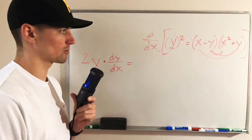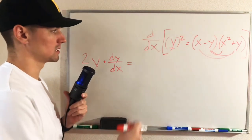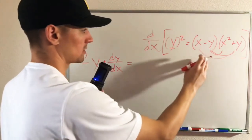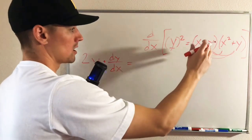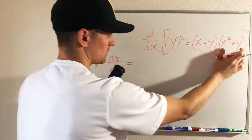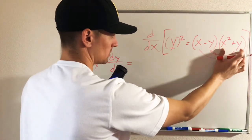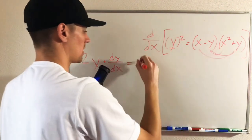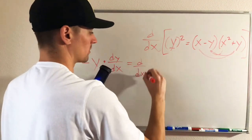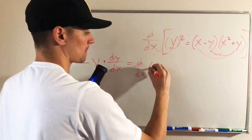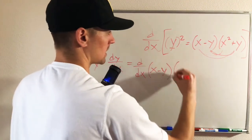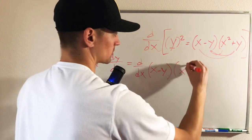So we're going to do that using the product rule. Product rule says the derivative of this whole thing is just going to be the derivative of our first function times the second function.